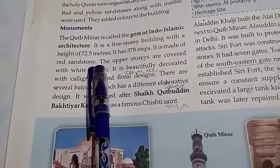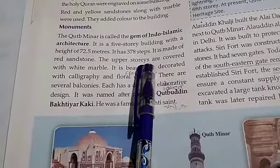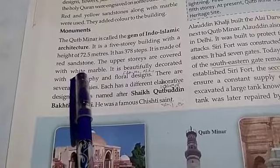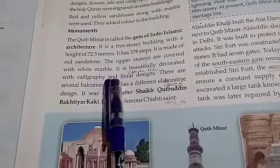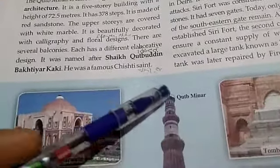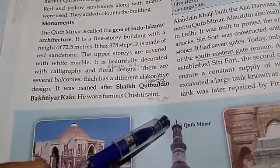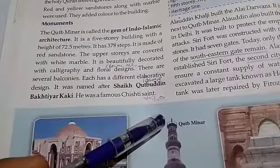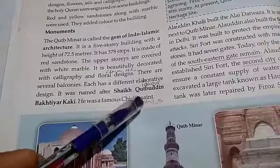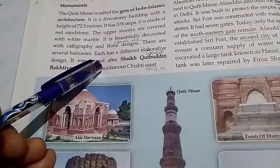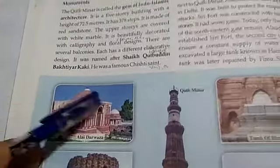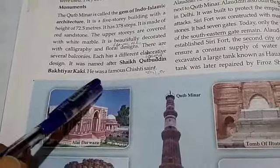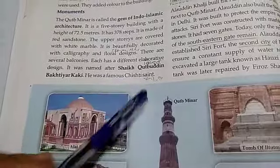It is beautifully decorated with calligraphy and floral designs. There are several balconies with different innovative designs. The Qutub Minar was named after Sufi saint Qutbuddin Bakhtiyar Kaki. The construction was started by Qutbuddin Aibak; only one storey had been completed when he died. Iltutmish later added three more storeys. The fourth storey was later destroyed by lightning.